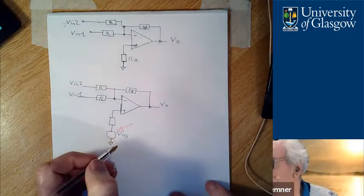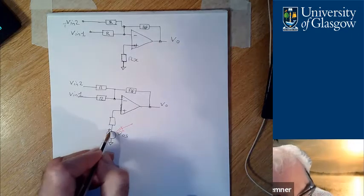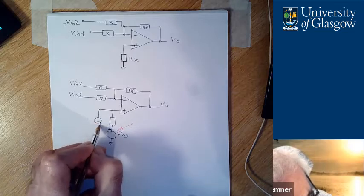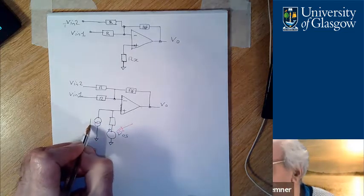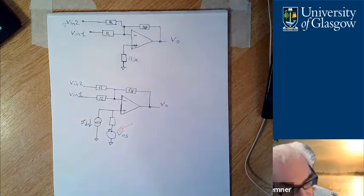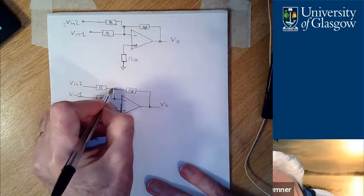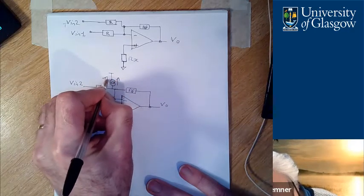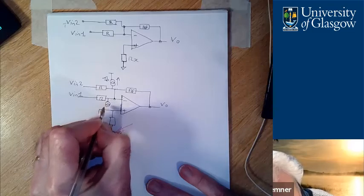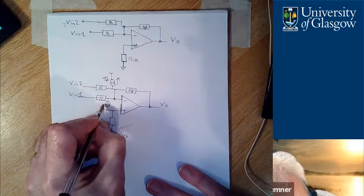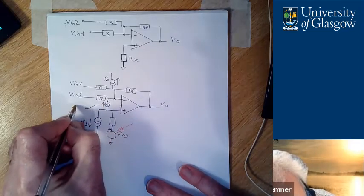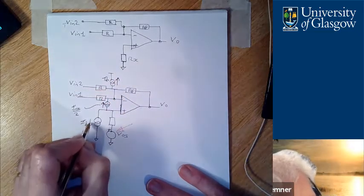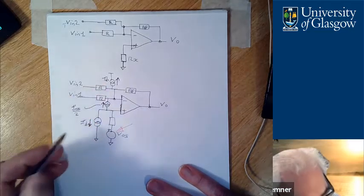The first part of the question asks us to redraw the circuit shown in Q1 showing all sources of DC error due to the op amp. So I've redrawn the circuit. Here I've placed the offset voltage - it doesn't matter which side the plus and minus goes on, but I'll define it there. Also we've got bias current Ib1, bias current Ib2, and between the two nodes here we've got Ios upon two.